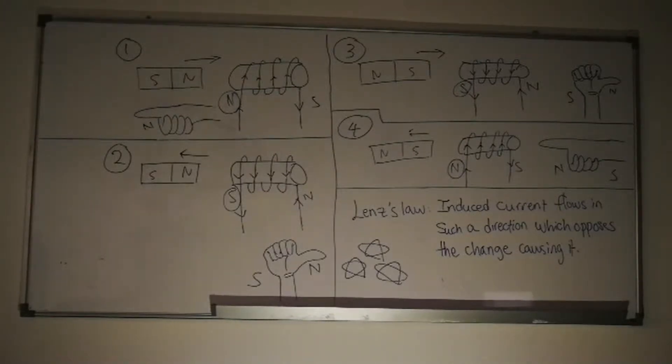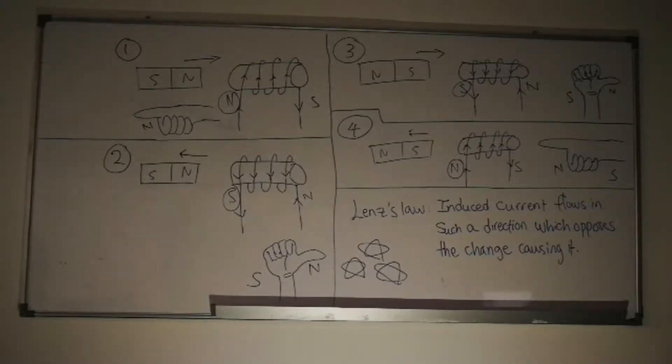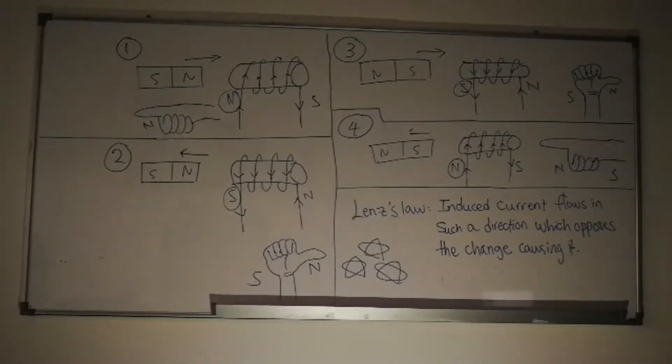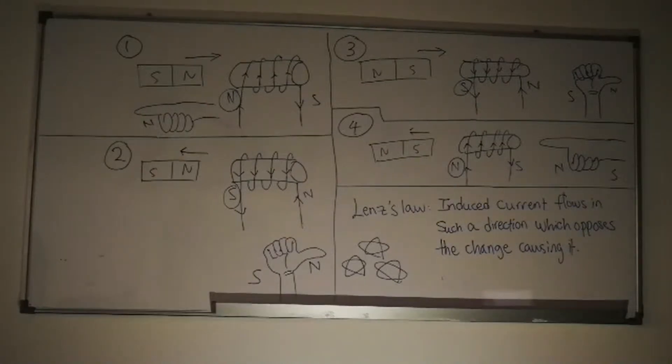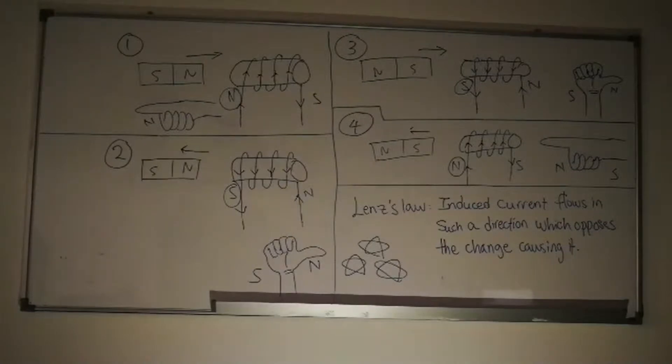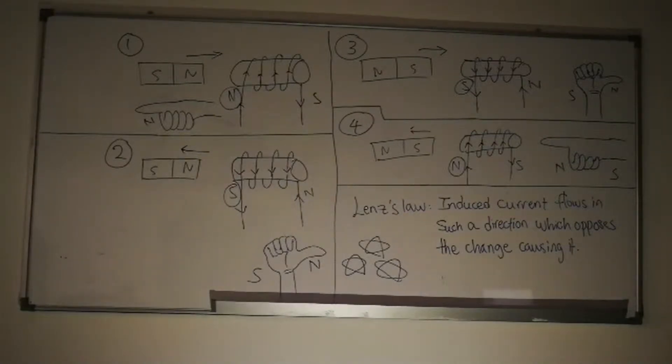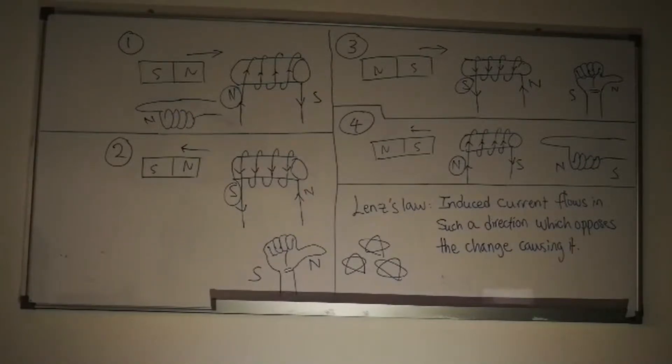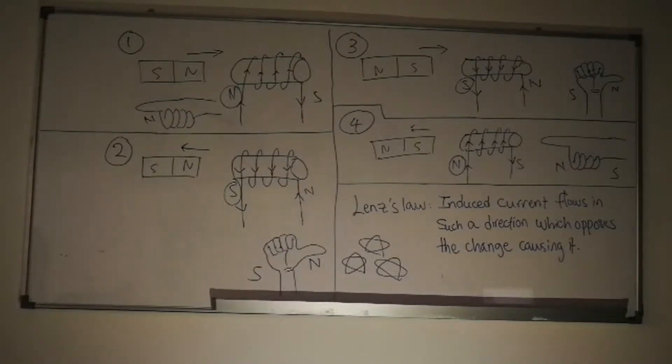In the second diagram, the magnet is removed from the solenoid. The magnetic flux in the solenoid decreases. Therefore, in order to oppose the change, opposite poles are induced at the end of solenoid that is closest to the magnet. Consequently, the induced current flows in the same direction as the direction of the movement of the magnet.